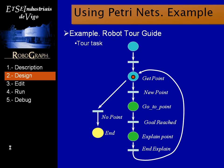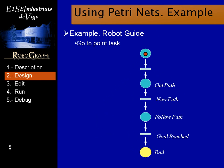The sequence for this point is going to be similar. Finally, when the list is empty, the Petri Net will conclude.